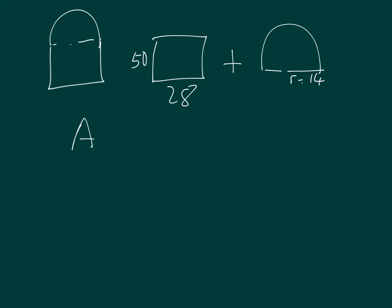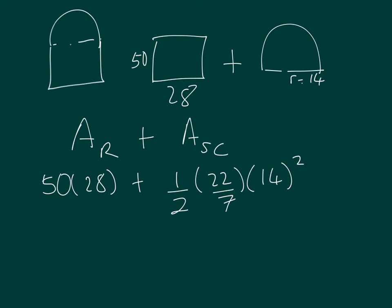It's the area of the rectangle plus the area of the semicircle. The rectangle is 50 × 28. The area of the semicircle means half the area of a circle, so (1/2)πr². Pi is 22/7 and r is 14. You can use your calculator to work that out - probably calculate it in two halves rather than going all the way through at once.